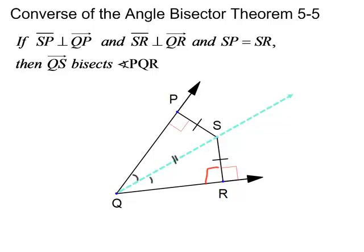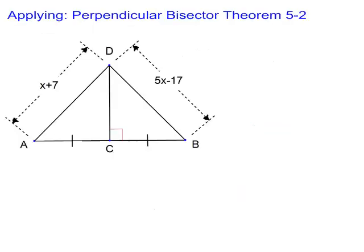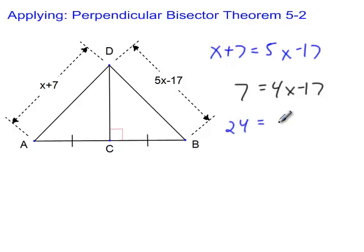Applying the perpendicular bisector theorem says that if this point D is on perpendicular bisector, then this line segment AD is going to have to be congruent to BD. So you just set the two expressions equal to each other. If I subtract X from both sides, then add 17 to both sides, and divide by 4, X is 6. If you substitute 6 back in, you'll find that this side is 13.